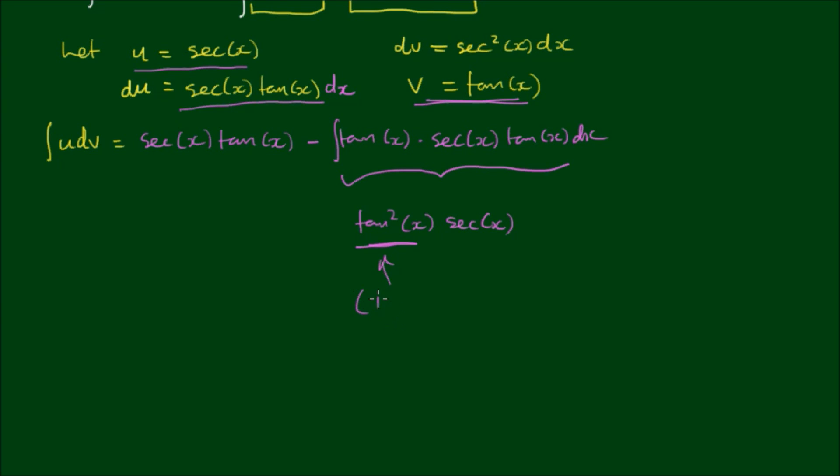We have the expression 1 plus tan²(x) is equal to sec²(x). So this means we can write tan²(x) as sec²(x) minus 1. And the trailing sec(x) term gets copied.